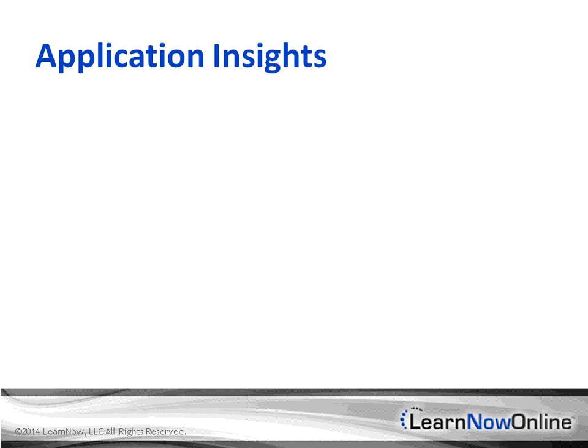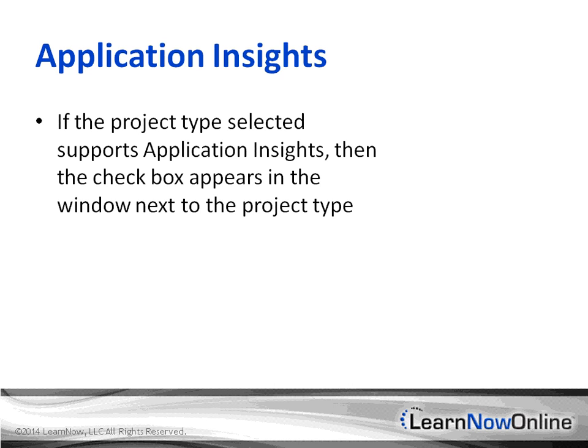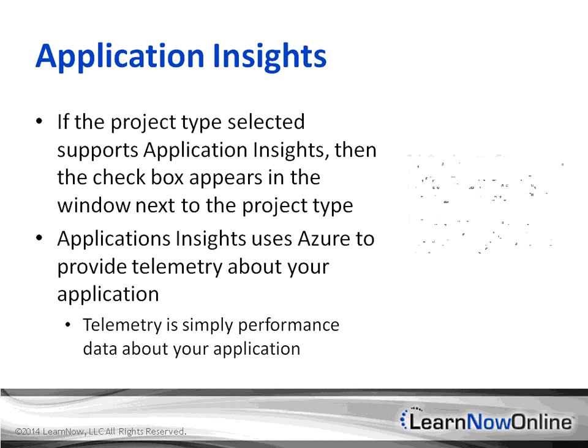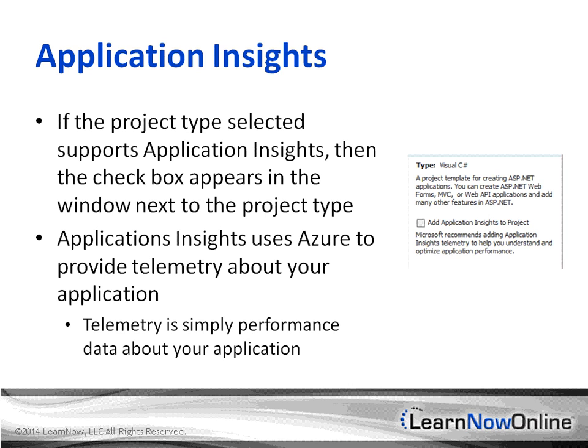In the latest version of 2013, there is a new feature called Application Insights. Application Insights integrates directly with Azure, so you'll need an account with Azure to make use of it. Basically, what Application Insights does is it allows you to collect telemetry data on your ASP.NET application. While this is not specifically an MVC feature, it is something you can make use of within your MVC 5.0 applications to help gain critical information on the performance of your application.